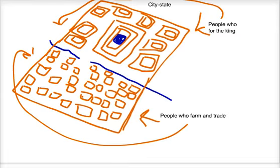In the city-state, people who work for the king live next to the king, right here. And people who farm and trade who don't work for the king live right here.